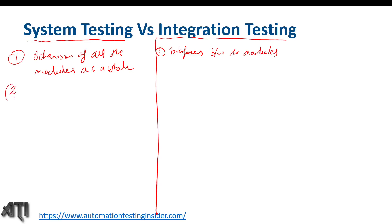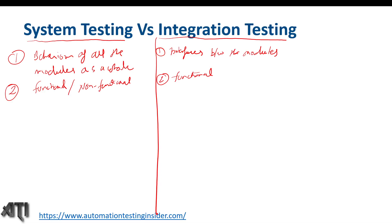The second difference: what kind of testing do we perform? In system testing, we perform both functional and non-functional testing. In integration testing, we perform functional testing only. Functional testing includes UI testing, input domain testing, and database testing. Non-functional testing covers performance, security, and memory — these all come under non-functional testing.